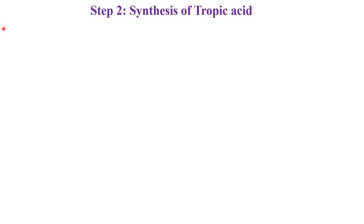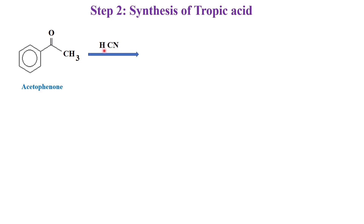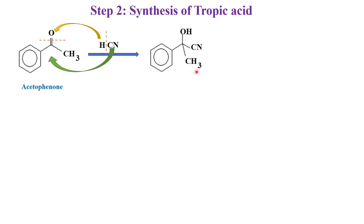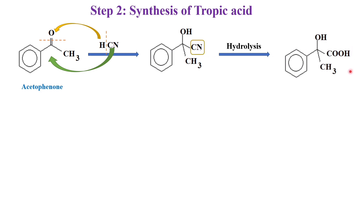Step 2 is the synthesis of tropic acid. For this, we have taken the starting material as acetophenone, C6H5COCH3. Acetophenone reacts with HCN. By the addition of HCN, the double bond between carbon and oxygen would be broken — hydrogen adds to the oxygen and CN attaches to the carbon — and we are getting the cyanohydrin product. On hydrolysis, the cyanide is hydrolyzed and we are getting an acid.